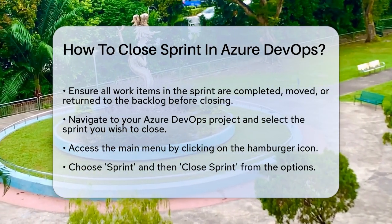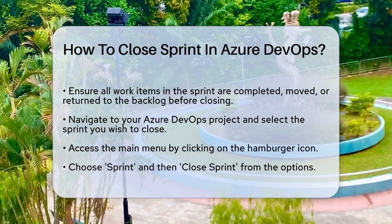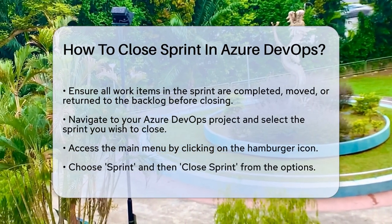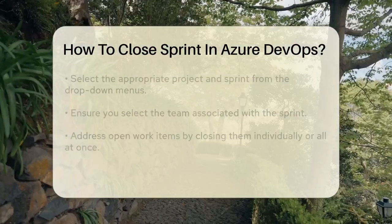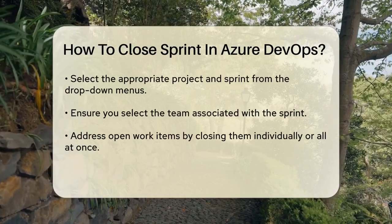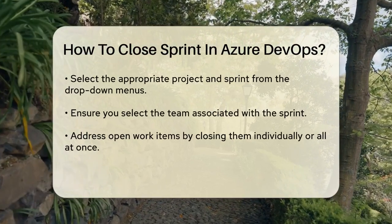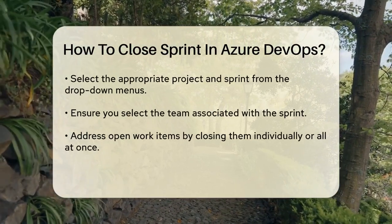To start the process, go to your Azure DevOps project and navigate to the Sprint you want to close. You can do this by selecting the project and then the specific Sprint from the dropdown lists.